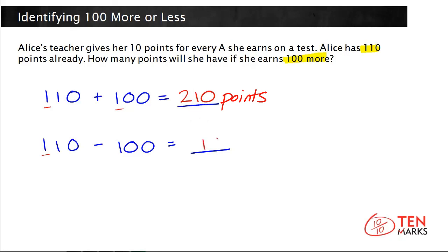So this difference would just be 10 because 100 take away 100 is 0, and then you're left with the other digits. You have the 10 left. So if she lost 100 points, she would be left with only 10. Thanks for watching.